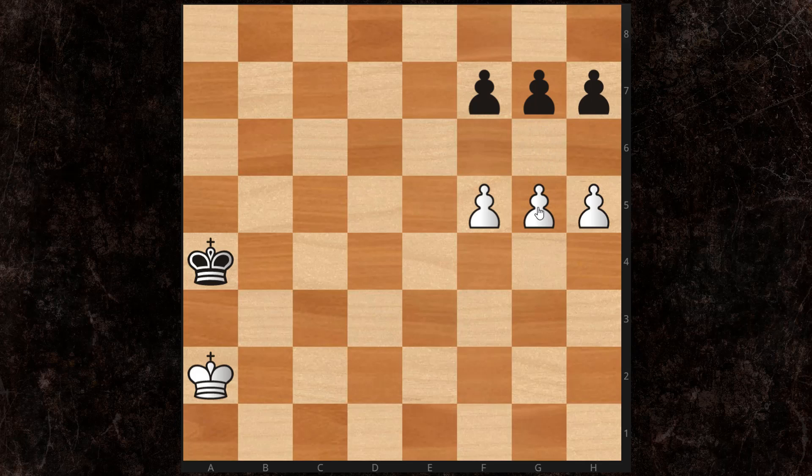Now notice this worked because these three pawns are further advanced. So if you get this type of position, you'll want to recognize this opportunity and create it for yourself by advancing your pawns as far as possible down the board. So let's go back here.